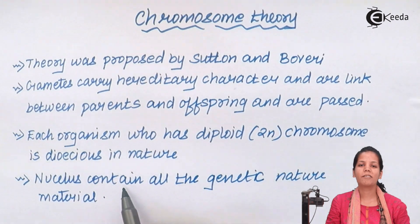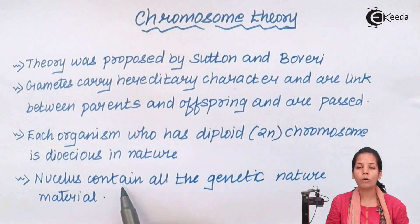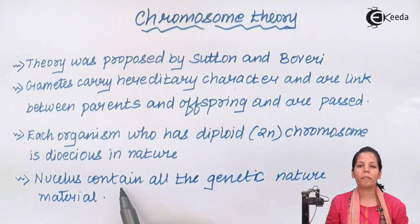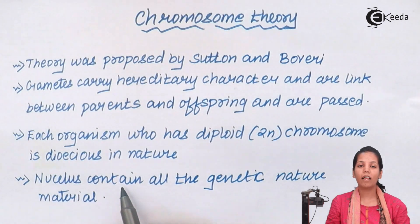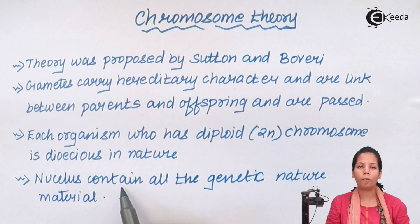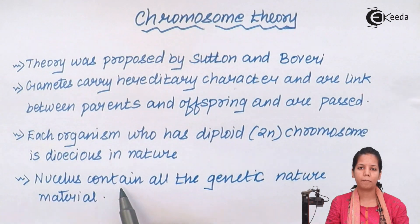The nucleus is the master control of the cell, and it also contains your chromosomes or your genetic material, which is basically your hereditary-determining characteristic. The way you look, the way your hair looks, the way your eyes look — everything is decided by your chromosomes, which are passed on by your parents.